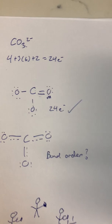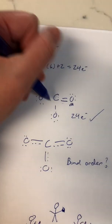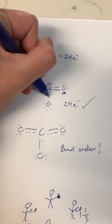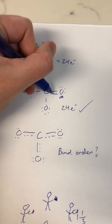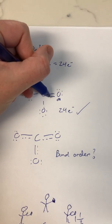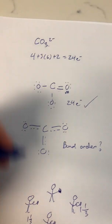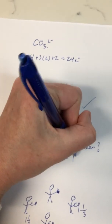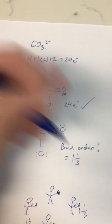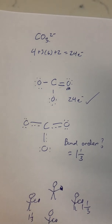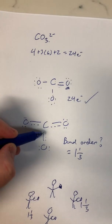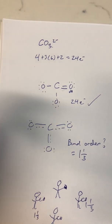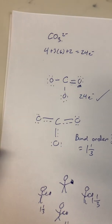Going back to the structure, they all already have one bond, but the three oxygens are sharing this one extra bond. That's why the bond order ends up equaling one and one third — they each get one and one third bonds.